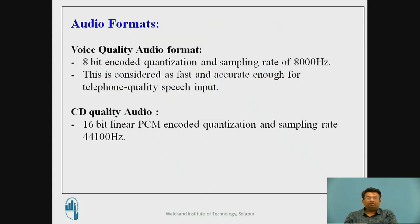There are basically two audio formats: the voice quality audio format and the CD quality audio format. In the voice quality audio format, an 8-bit encoded quantization level is used and the sampling rate is 8000 Hz. This is considered fast and accurate enough for telephone quality speech.